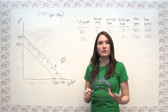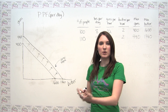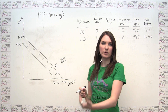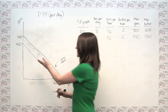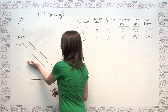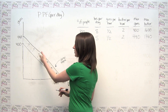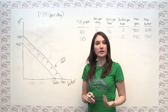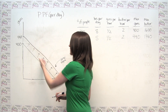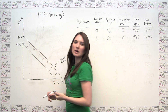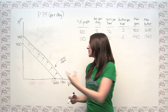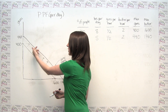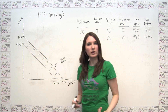If, for whatever reason, we were to experience a population decrease rather than a population increase, we would see a shift down and to the left as opposed to up and to the right. But what we see here is, in fact, economic expansion because our society can make more of both items than it could before.